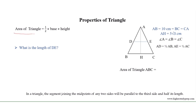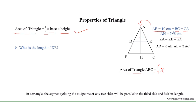We know that the area of a triangle is equal to half multiplied by base multiplied by height. According to the formula, we can determine the area of triangle ABC. It is given that AB equals 10 centimeters, and BC equals CA, which is why triangle ABC is an equilateral triangle. The height of the triangle is equal to 5√3 centimeters.